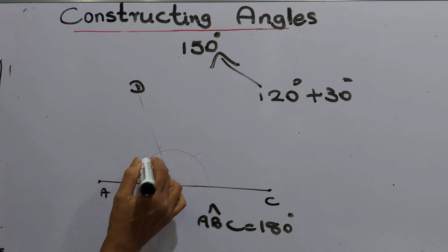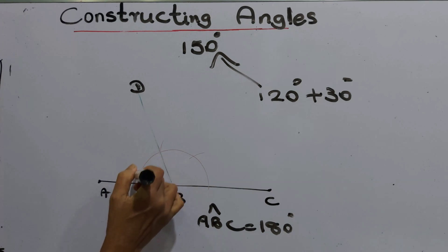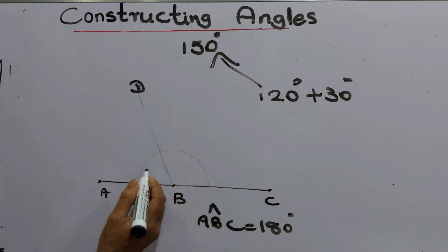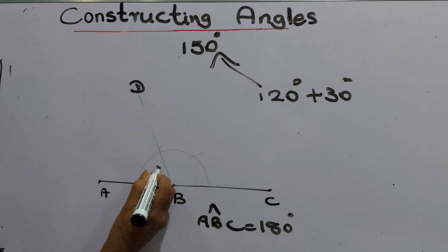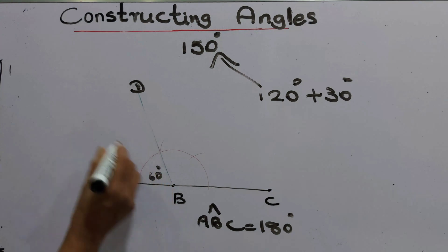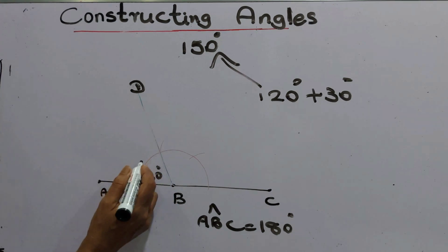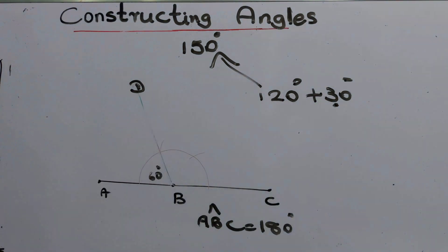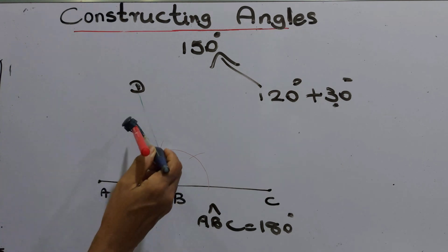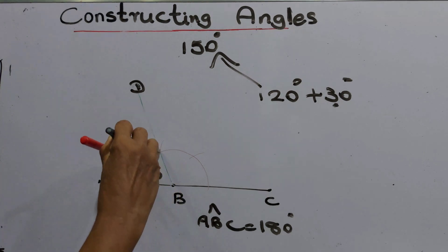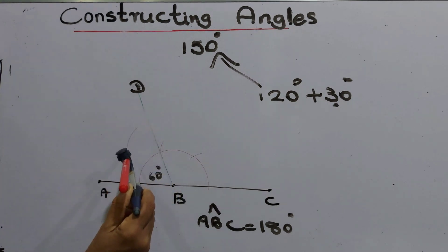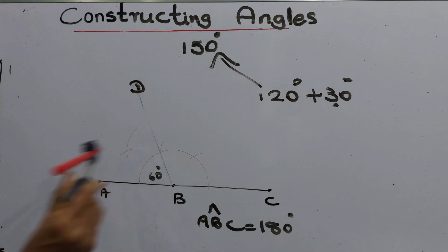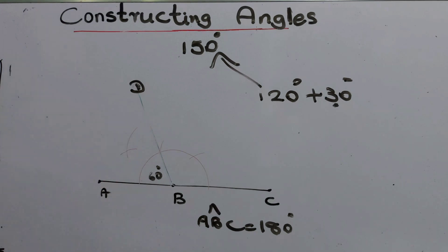If we bisect angle DBA — that angle is 60 degrees — and divide it into two equal angles, we can take 30 degrees from here. What we have to do is bisect angle DBA: keep the compass point here, draw an arc, then another point here.